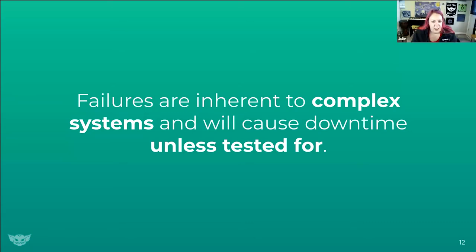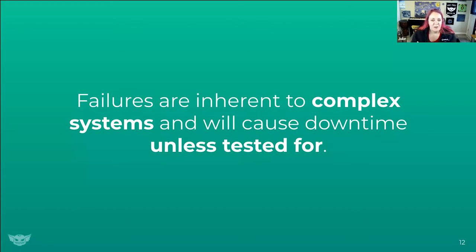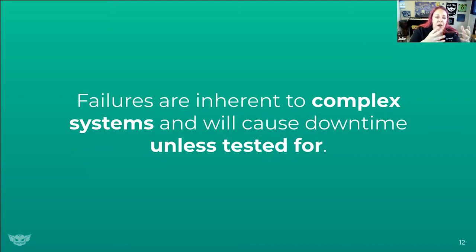When we talk about chaos engineering, Gremlin is a platform that allows you to practice chaos engineering by safely injecting failures into your system so you can understand how they're going to behave. Failures are everywhere — you can pick any date and search for 'outage' and you'll find something. Just last Tuesday we saw major outages due to the AWS US-East-1 incident. Failures are inherent to complex systems, and our systems have completely changed from the monolith to the microservice as we moved from on-prem to the cloud.